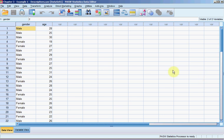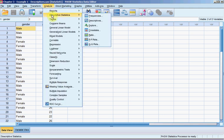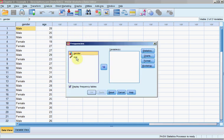What we have here is a data set that has two variables. Gender, which is categorical. As you can see, I've coded females as one, males as two. And age, which is our continuous variable. We'll begin by analyzing age, the continuous variable. We click on Analyze, Descriptive Statistics, Frequency.